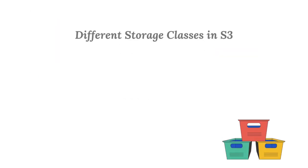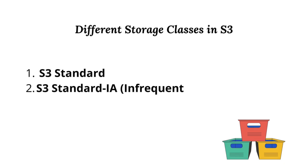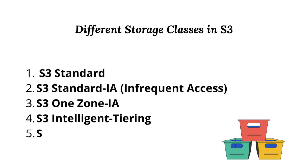The different storage classes in S3 are: S3 Standard for frequently accessed data; S3 Standard Infrequent Access and S3 One Zone Infrequent Access for less frequently accessed data; S3 Intelligent Tiering for automatic cost saving for data with unknown or changing access patterns; and S3 Glacier for archival.